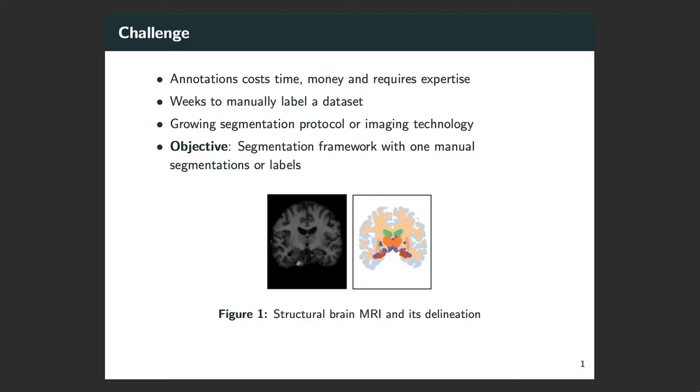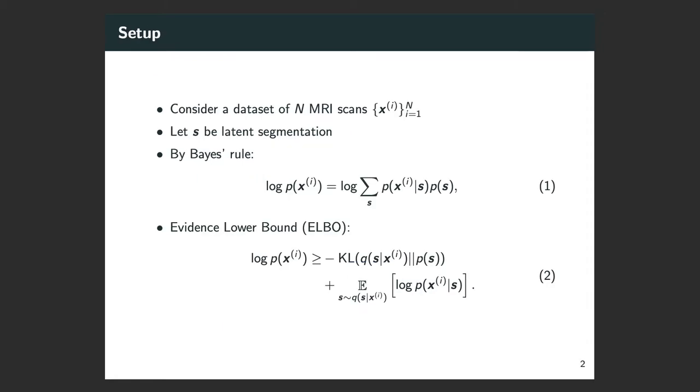Even if you manage to get enough labels to train a supervised algorithm, there is a growing number of imaging protocols and different labeling conventions. You have to label everything again in order to train a new algorithm that can account for those changes. Seeing how expensive it is to train a supervised model, our objective is to introduce a method to segment the brain using one label example.